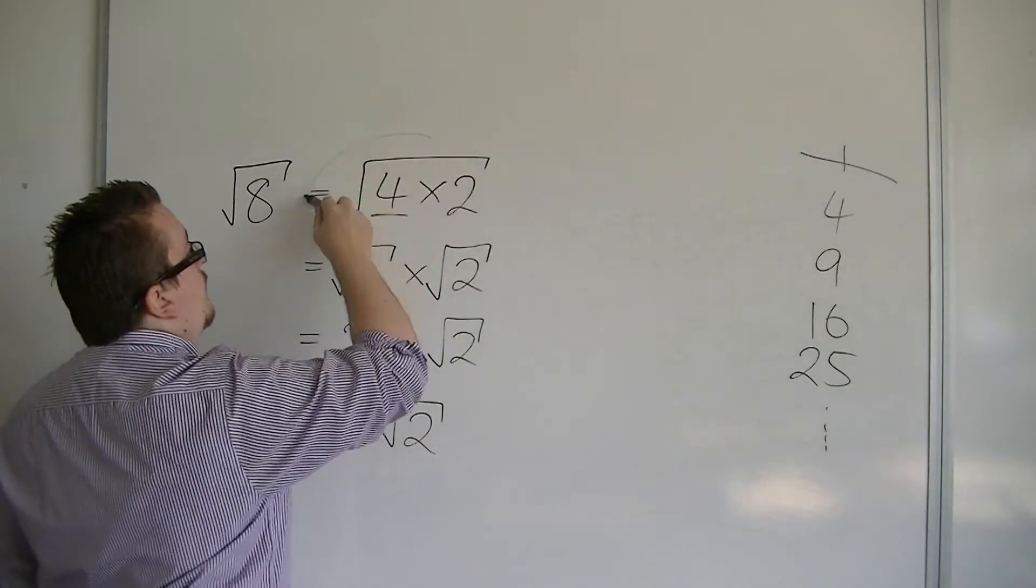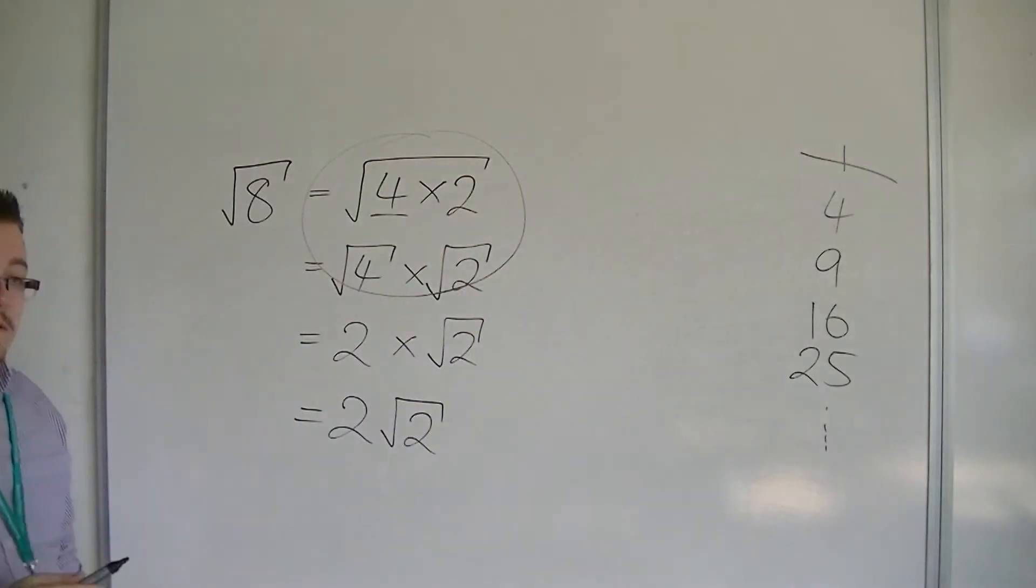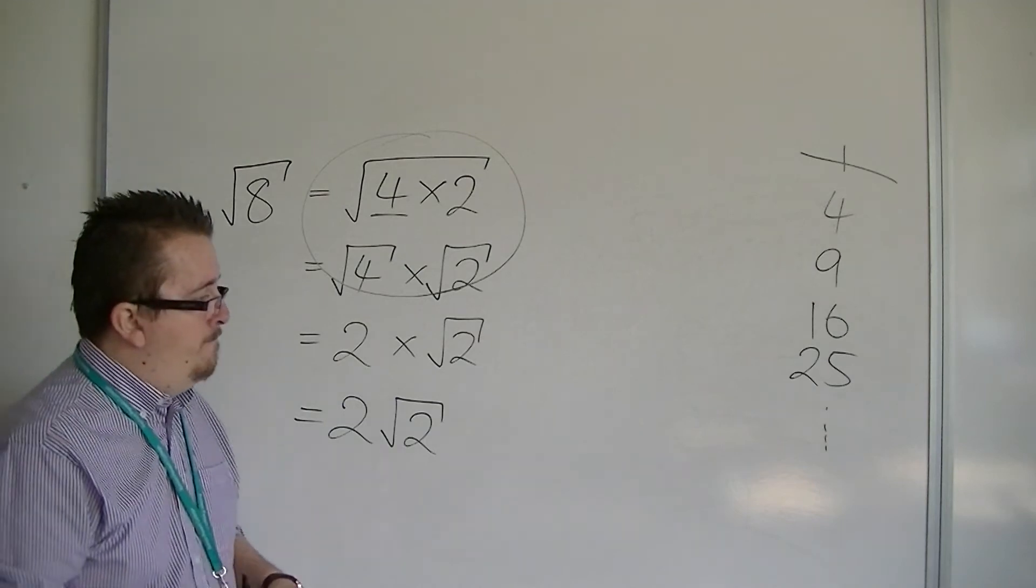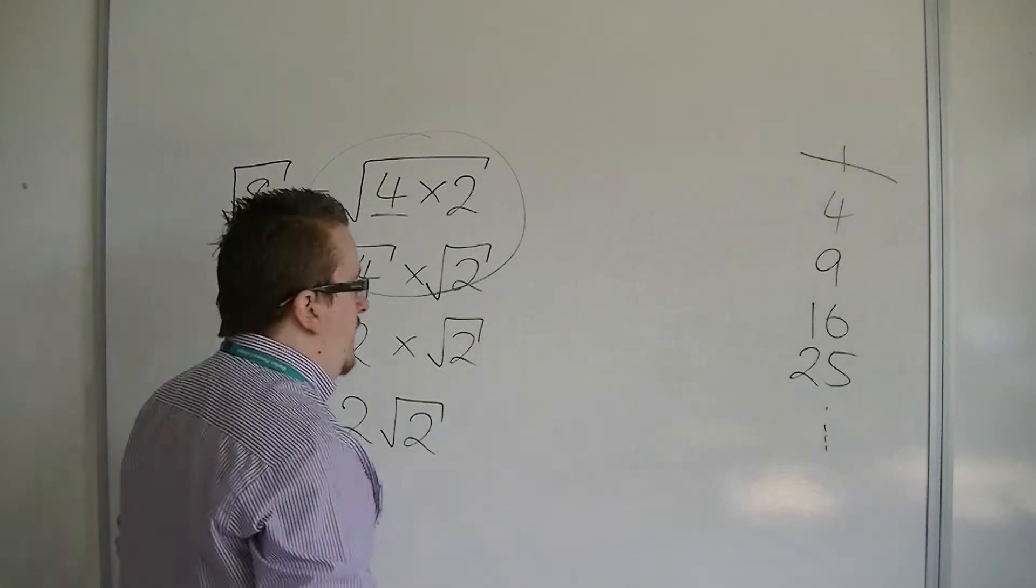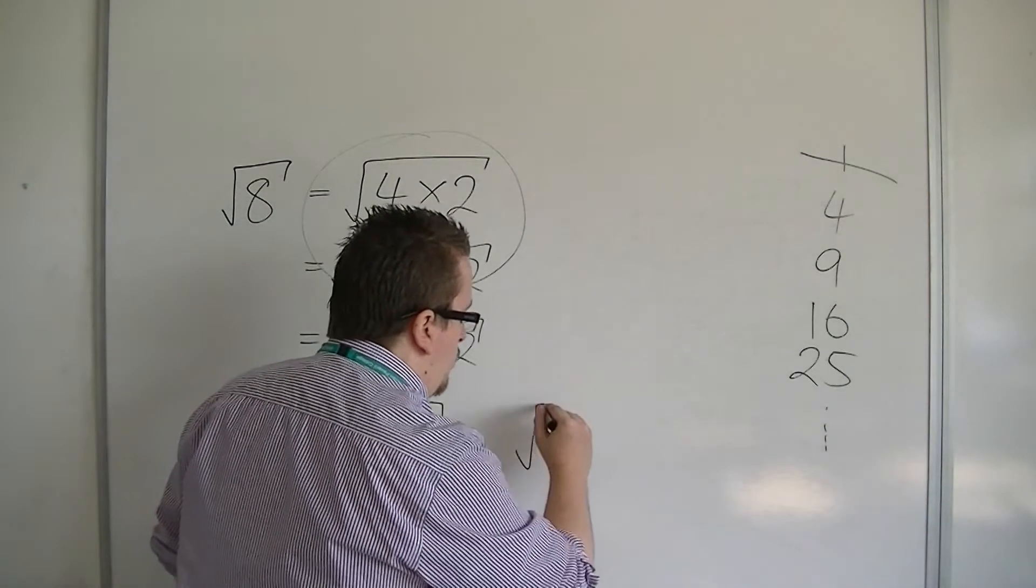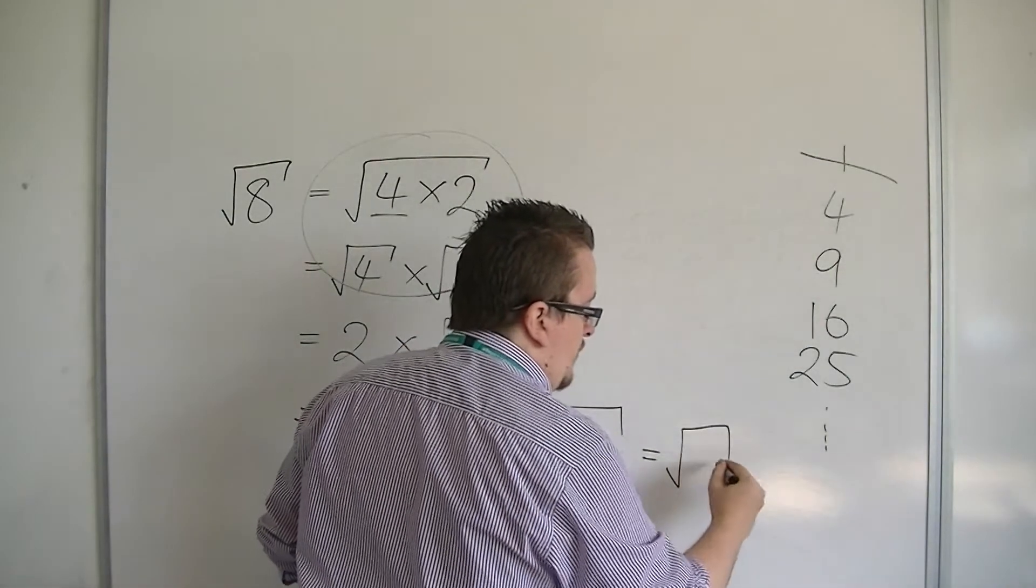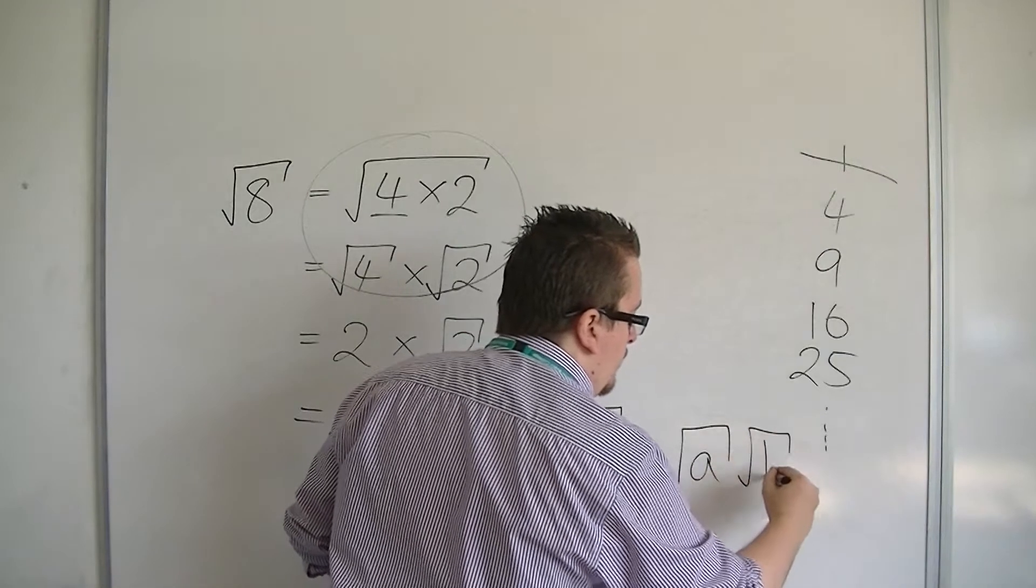Now, the trick that I used here is one that you really need to get used to. So, that trick is this: The square root of a times b is the same as root a times root b.